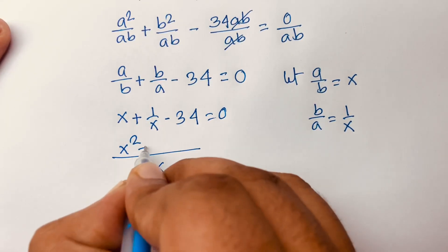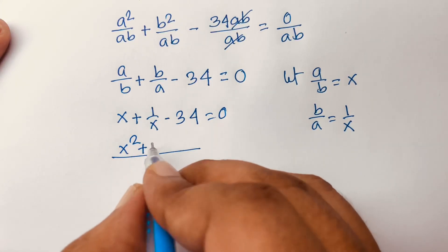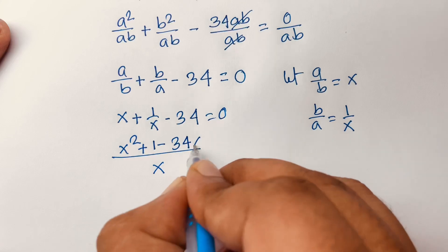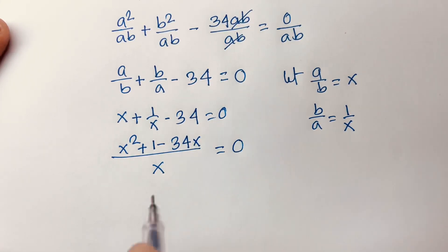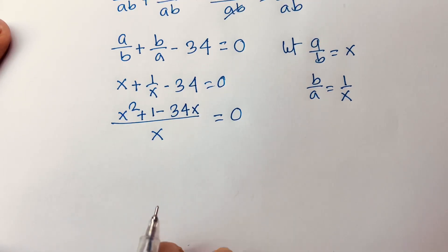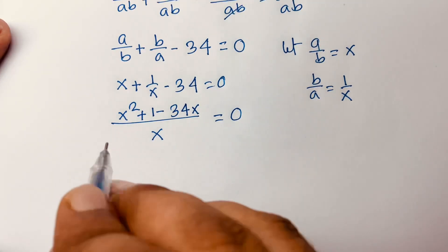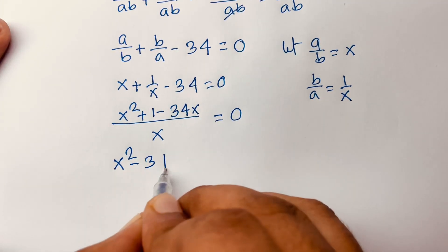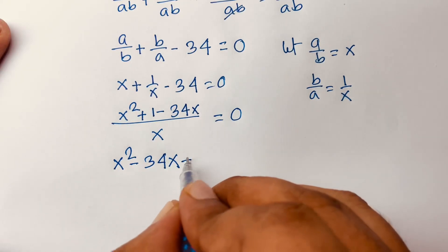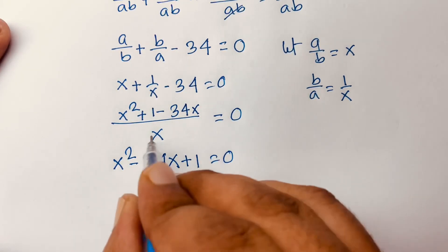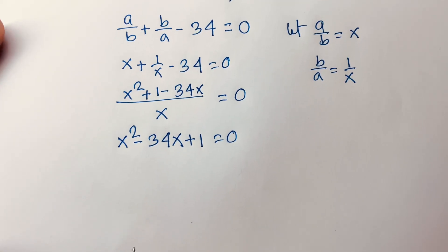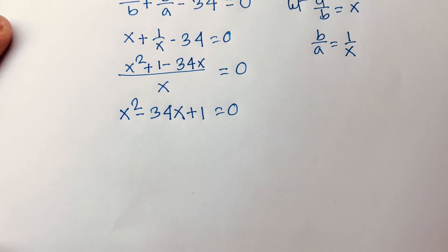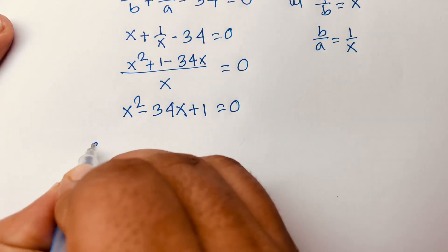Taking x as the common value, we get x squared plus 1 minus 34x equals 0. If I multiply both sides by x, I can see it will be x squared minus 34x plus 1 equals 0. This is a quadratic equation.